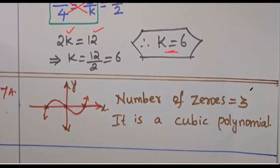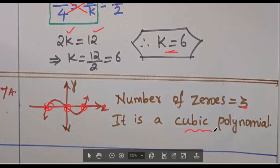Question 7: The curve is meeting the x-axis in three places — 1, 2, 3. Therefore the number of zeros is 3, and it is called a cubic polynomial.